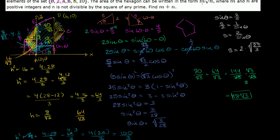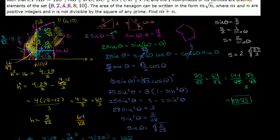So the area is in the form 48√3, meaning m = 48 and n = 3. Therefore m + n = 48 + 3 = 51. That was a tiring problem — my brain started to fry near the end keeping track of things. Hopefully you enjoyed it.